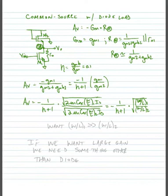So if we want to have a large gain from this type of transistor, then we would want W over L 1 to be much, much larger than W over L 2.